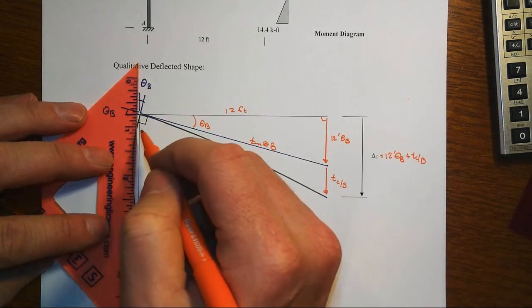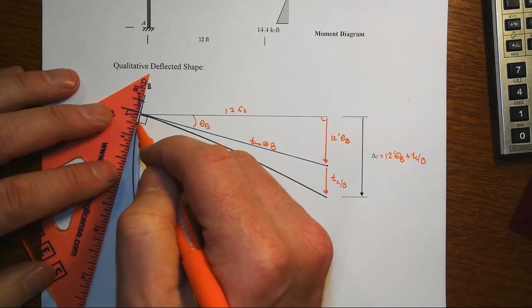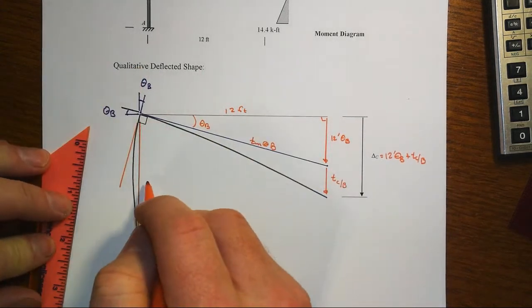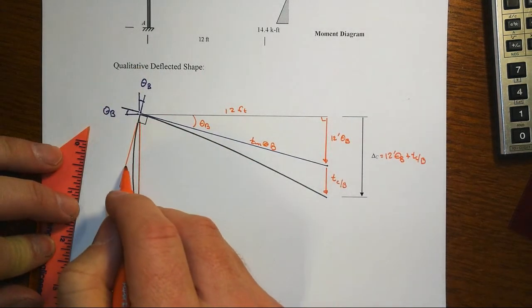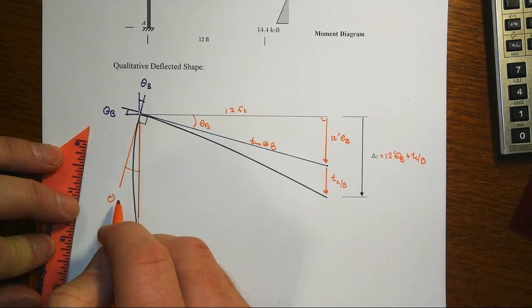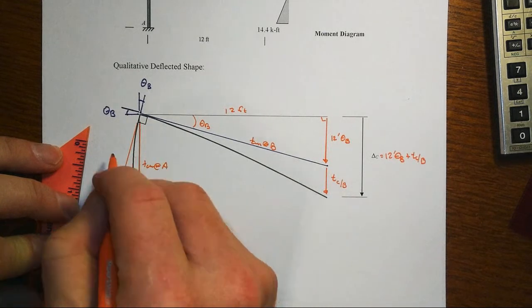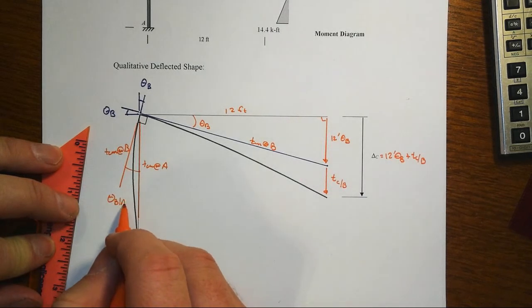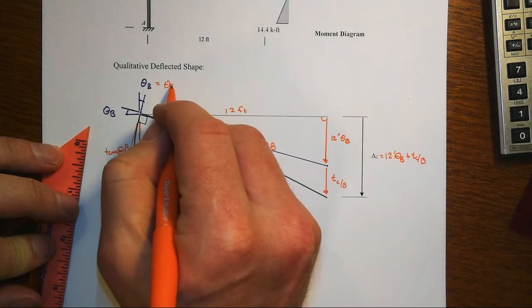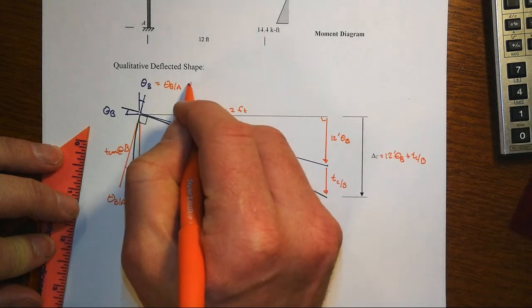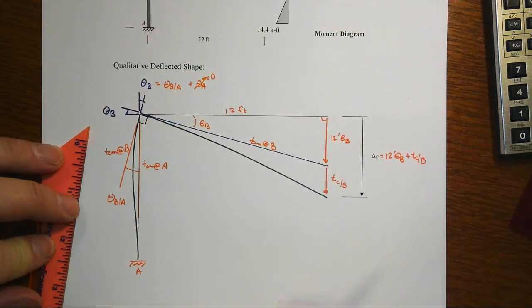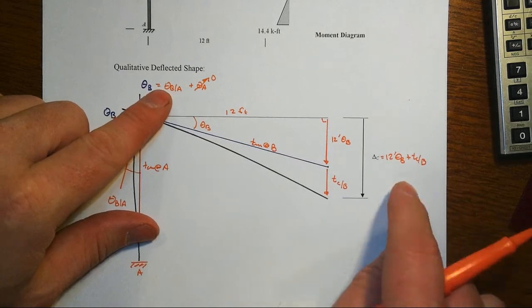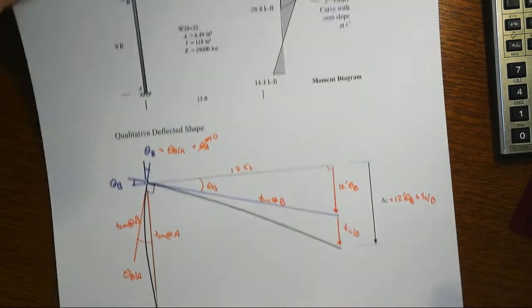and so that means that when we look at the tangent to B and the tangent to A, since that angle right there is also, because that's tangent at A and that's tangent at B, then this angle is theta B with respect to A and theta B will equal theta B with respect to A. It will also be plus theta A, but theta A itself is zero. So with that then we really only have two quantities to go calculate and we've got the requested item, so let's go make it happen.